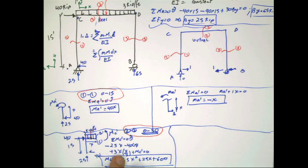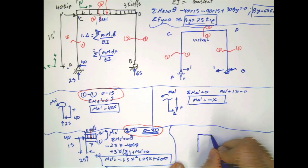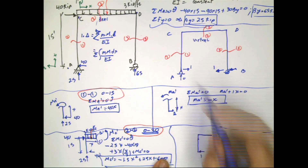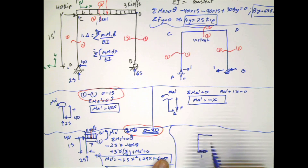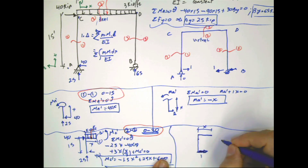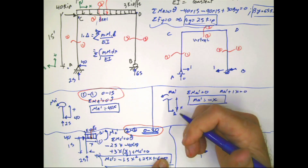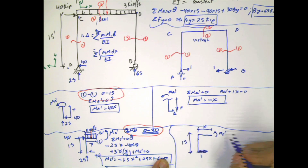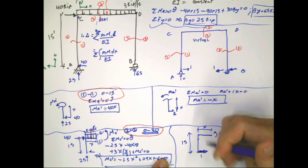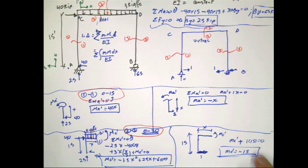For the virtual structure section 2-2, I have the unit force and make the cut. The distance from the support to B is 15. Summation of moments at the cut: m_c' plus 1 times 15 equals zero, so m_c' equals negative 15. That's my section 2-2 virtual equation.